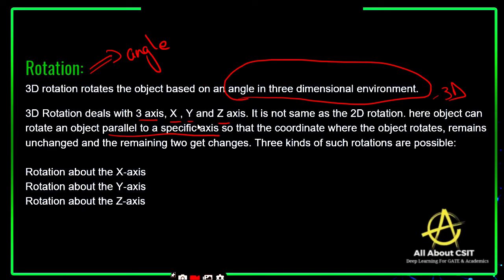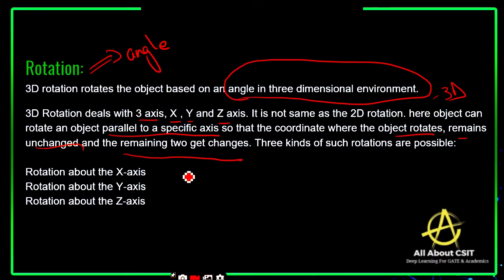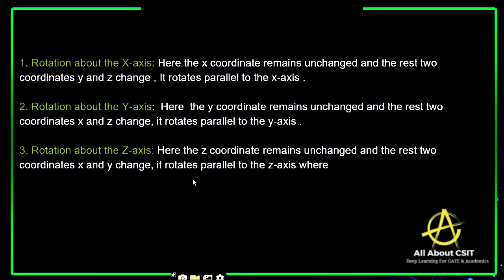When rotating parallel to a specific axis, the coordinates where the object rotates remain unchanged, and the remaining two coordinates get changed. Whatever specific axis we are taking, that axis coordinate remains unchanged and the other two axes will be changed. There are three kinds of such rotations: rotation about the x axis, y axis, and z axis.